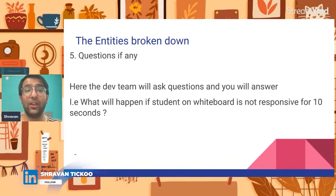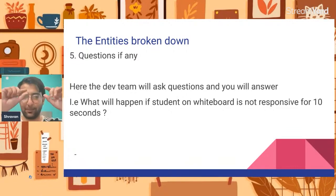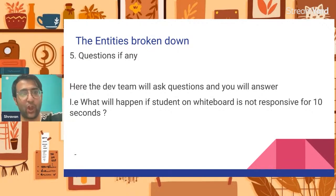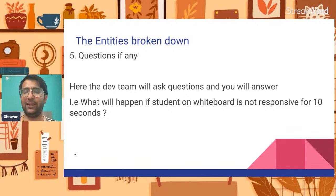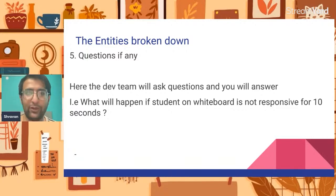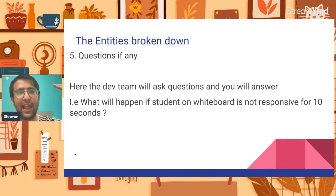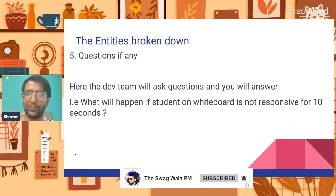The last part of your PRD is a questions section. Open the PRD and create a section called 'Questions' where design, QA, and other teams can ask questions. For example: 'What happens if a student on the whiteboard is not responsive for 10 seconds?' Teams can write their questions and the product manager can answer them. By the time your product discussion with engineering happens, everything is clear — objective, why, high-level solution, feature-level detail, designs, metrics, and open Q&A are all covered.